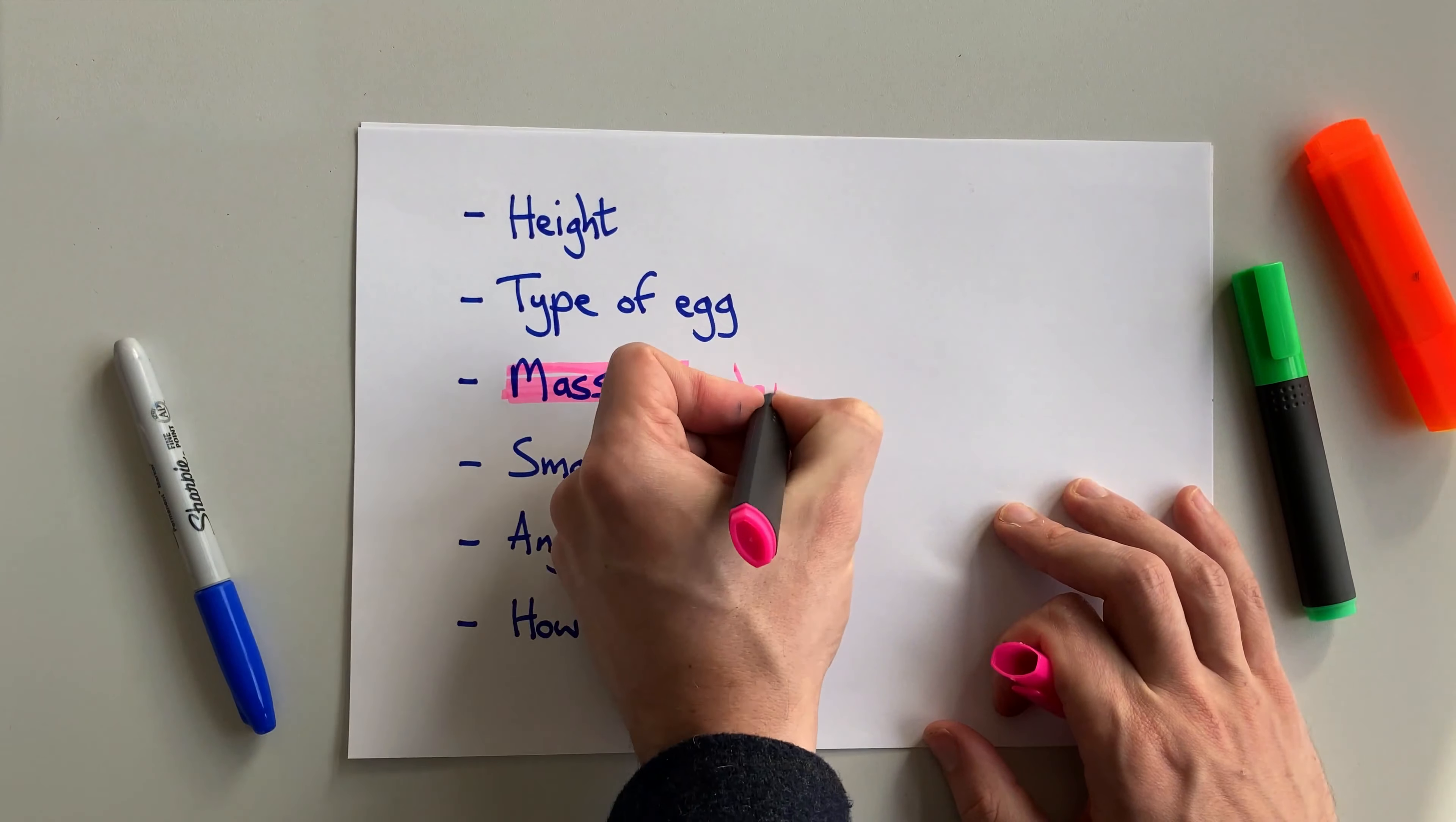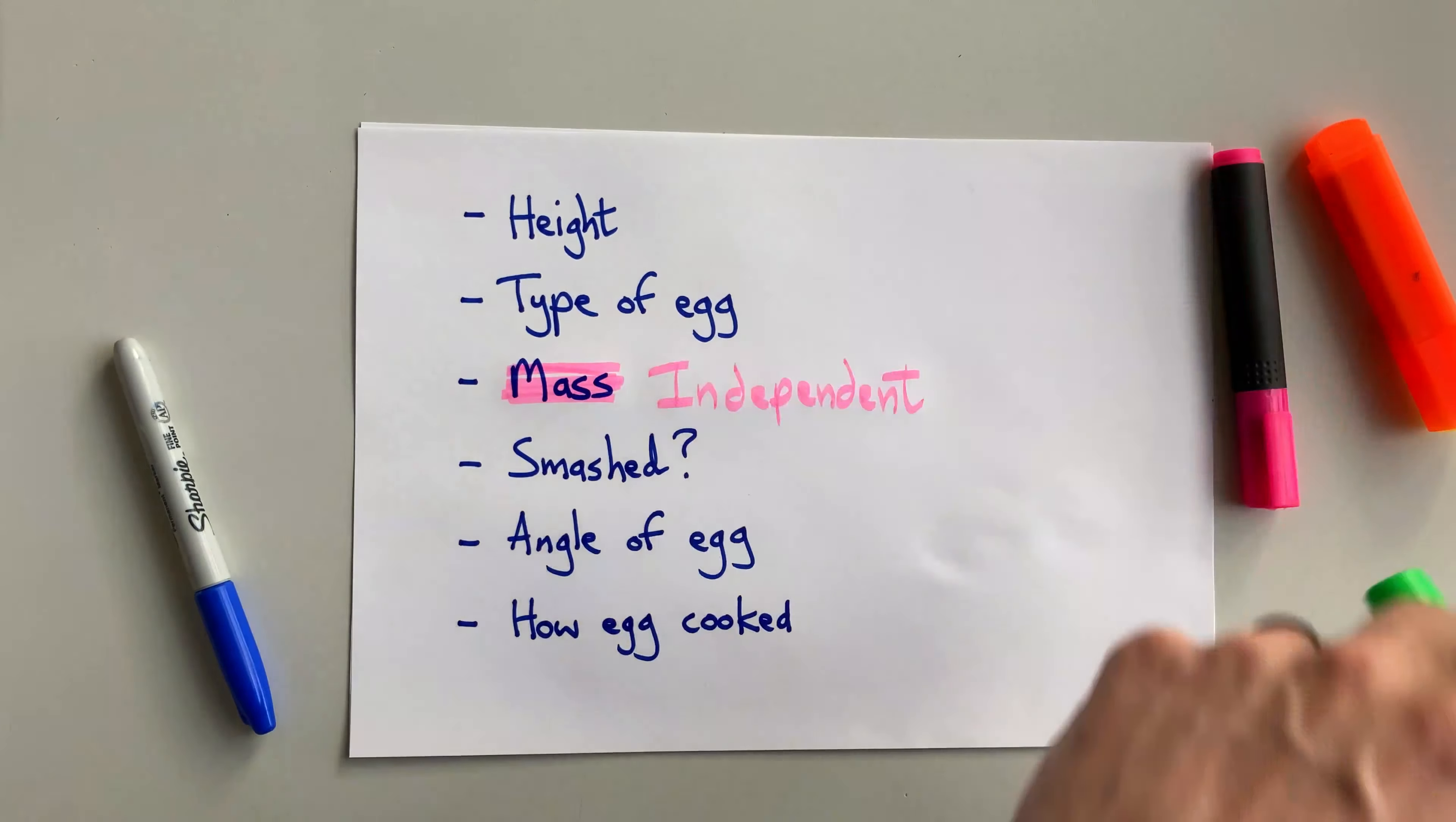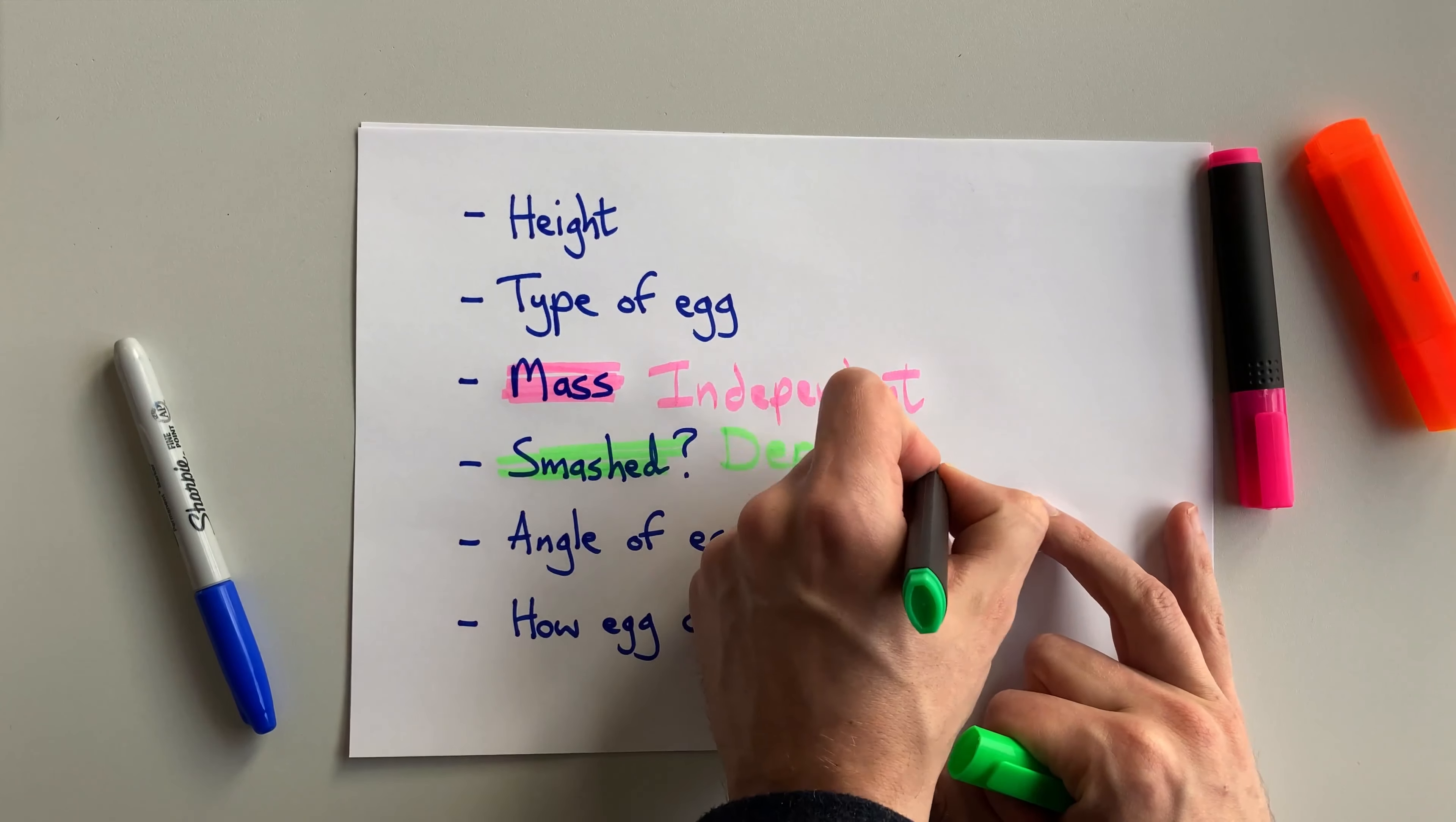So going back to the list of variables, my independent variable is the mass, and my dependent variable is whether or not it smashed.